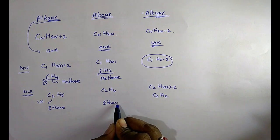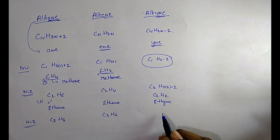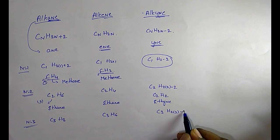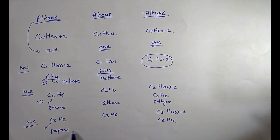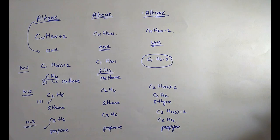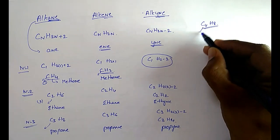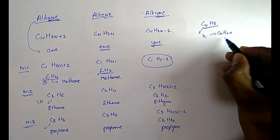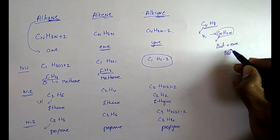For n=3: alkane gives C3H8 (propane), alkene gives C3H6 (propene), alkyne gives C3H4 (propyne). For n=4: C4H8 — the number of carbon atoms is 4, it fits the formula CnH2n, so prefix is 'but' and suffix is '-ene', giving butene.